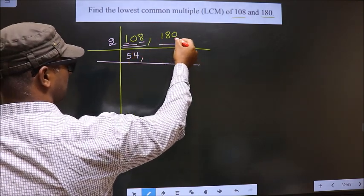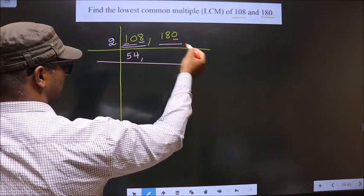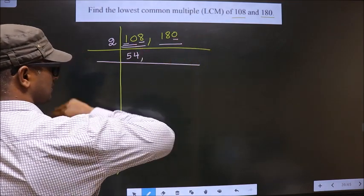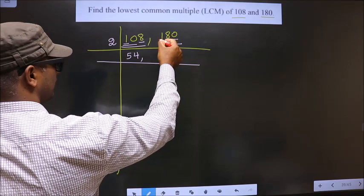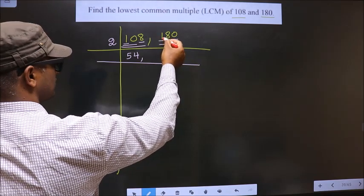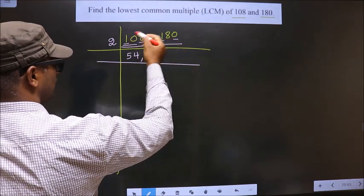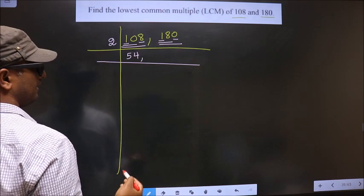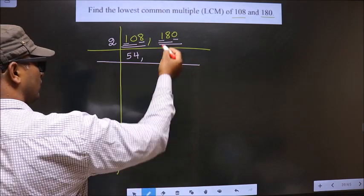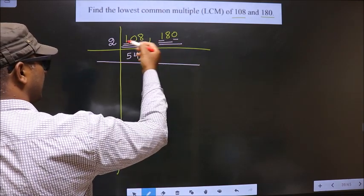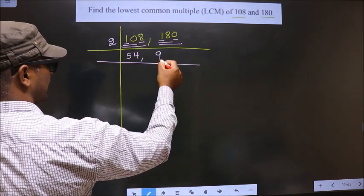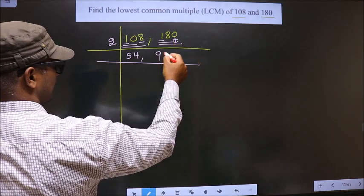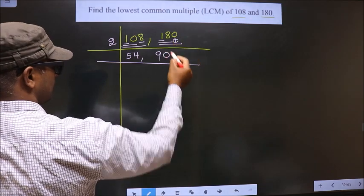For the other number, the last digit is 0, so this number is also divisible by 2. The first digit is 1; since 1 is smaller than 2, we take 2 digits, that is 18. When do we get 18 in the 2 times table? 2 times 9 is 18. This 0 is carried down as it is.